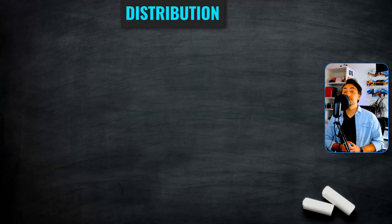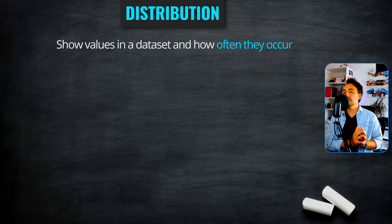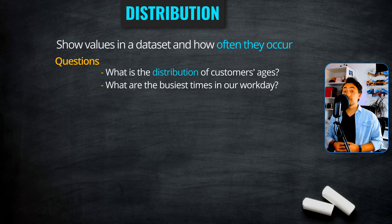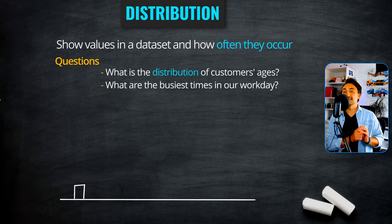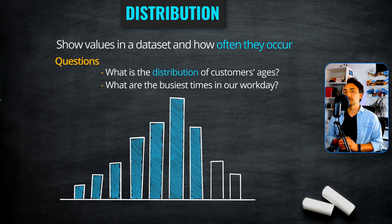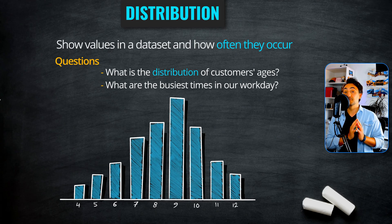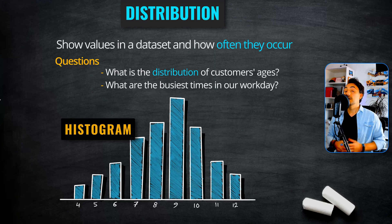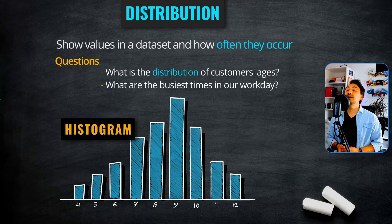Now we have the distribution category. We use it to show the values of a dataset and the frequency of their occurrence. If your question is something like what is the distribution of customer ages, or what is the busiest time in the workday, then we're talking about the distribution category. The best chart to visualize these questions is the histogram, which is an amazing way to show patterns using bins and makes it very easy to understand the distribution of data.